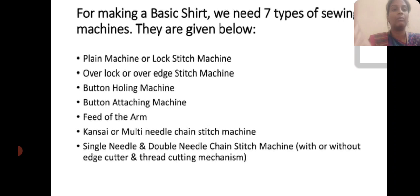For making a basic shirt, we need 7 types of sewing machines. They are: plain or lockstitch machine; overlock or over-edge stitching machine; buttonhole machine; button attachment machine; feed of the arm machine; single needle or double needle chain stitch machine; and machines with or without edge cutter and thread cutting mechanism.